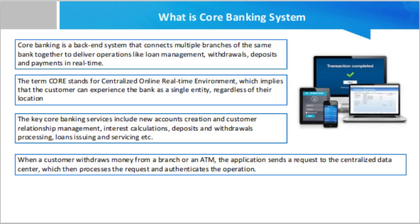How does core banking work? A core banking system comprises back-end servers that handle standard operations like interest calculation, passbook maintenance, and withdrawal. When a customer withdraws money from a branch or ATM, the application sends a request to the centralized data server, which processes and authenticates the operation. The data center contains a database, an application server, a web server, and a firewall to protect the system from malware attacks. Banks can host their data center locally or on the cloud.